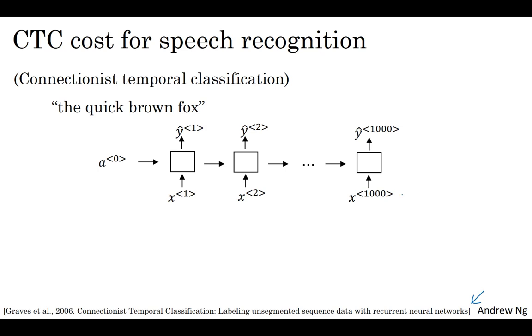Notice that the number of time steps here is very large. In speech recognition, usually the number of input time steps is much bigger than the number of output time steps. For example, if you have 10 seconds of audio and your features come at 100 hertz, so 100 samples per second, then a 10 second audio clip would end up with a thousand inputs. But your output might not have a thousand alphabets, might not have a thousand characters. So what do you do?